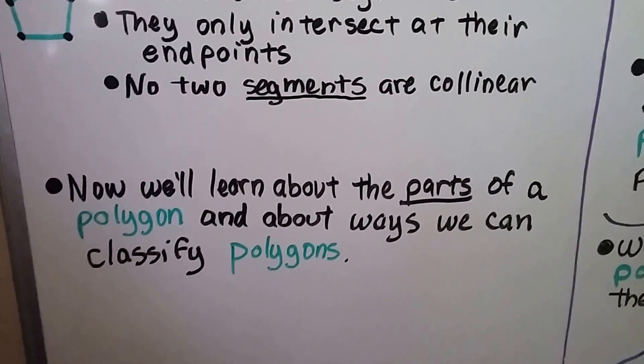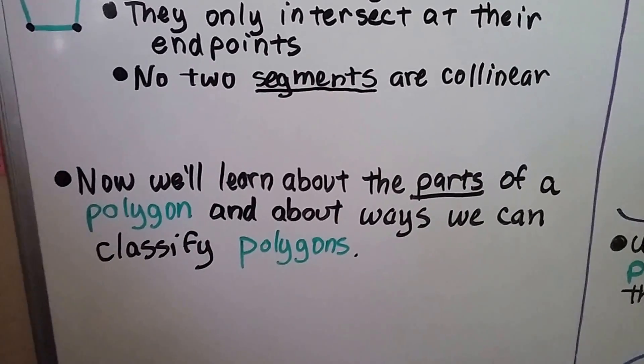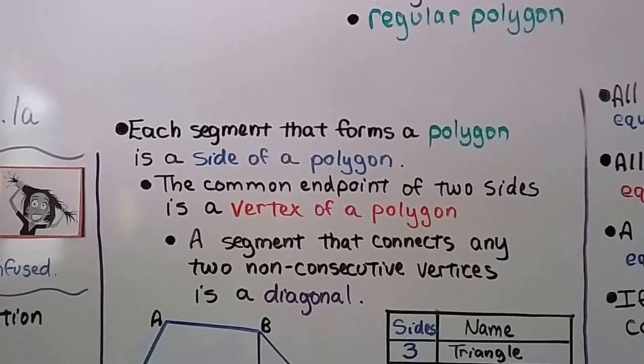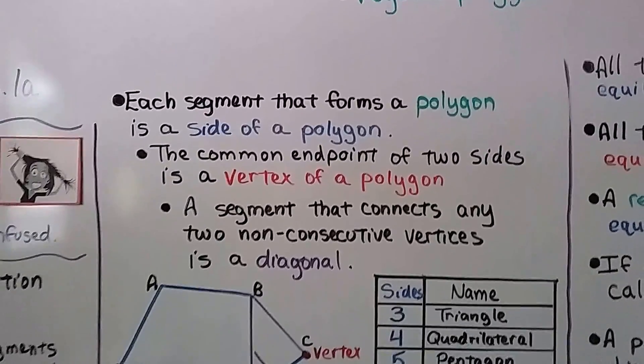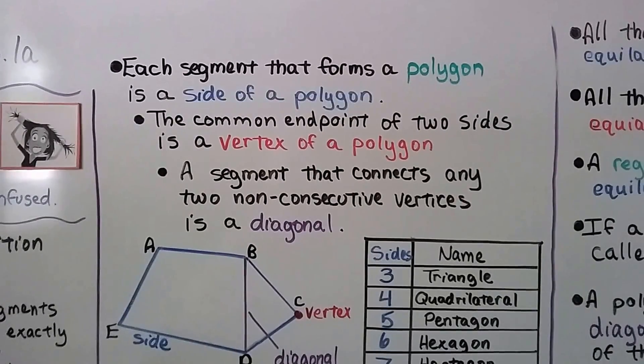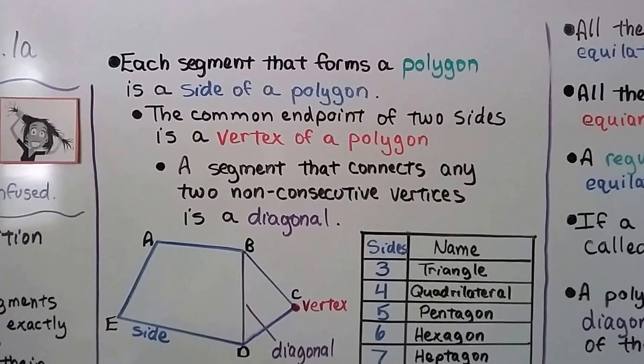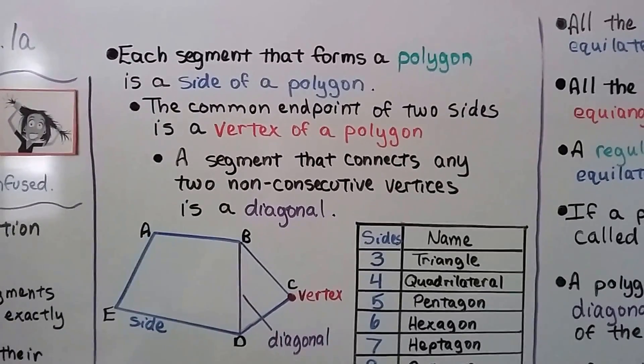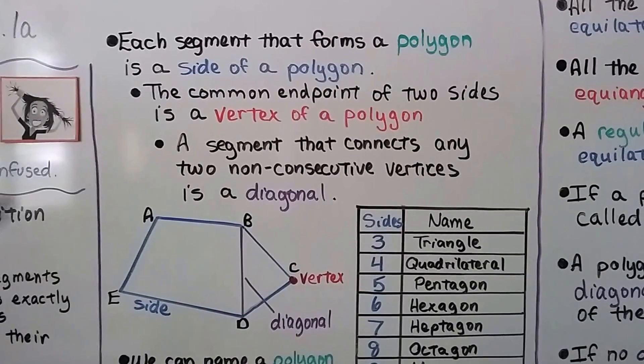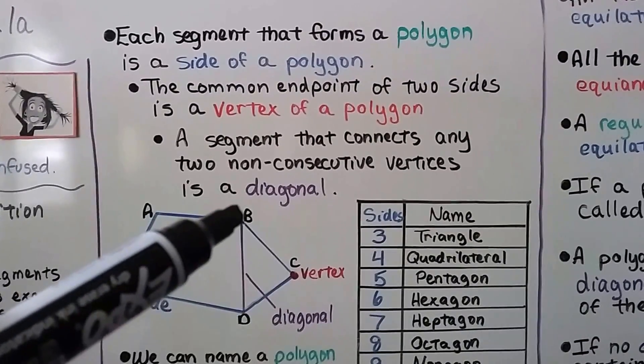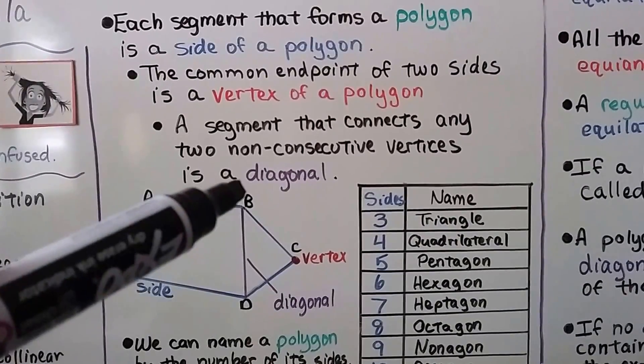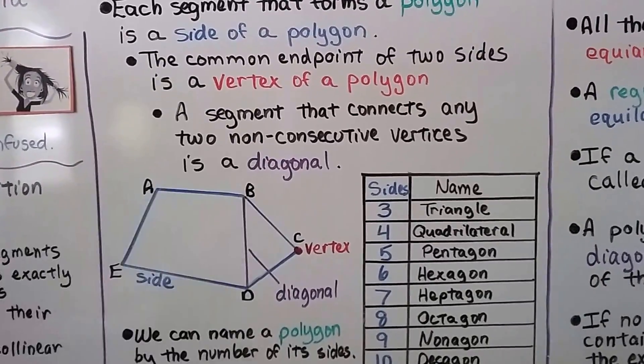Now we'll learn about the parts of a polygon and about ways we can classify polygons. Each segment that forms a polygon is a side of a polygon, and the common endpoint of two sides is a vertex. A segment that connects any two non-consecutive vertices is a diagonal. So non-consecutive means not in order. We're going from B to C to D—these are sides. If we cut across and go from B to D and skip C, then that's a diagonal.